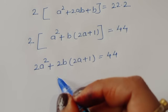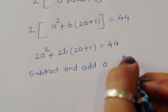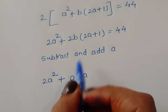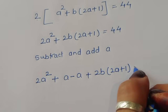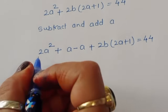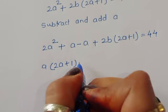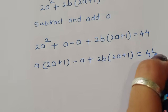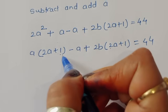Now we subtract and add a to form a useful factoring. We get 2a² + a − a + 2b(2a + 1) = 44. Taking a common from 2a² + a gives a(2a + 1), so we have a(2a + 1) − a + 2b(2a + 1) = 44.